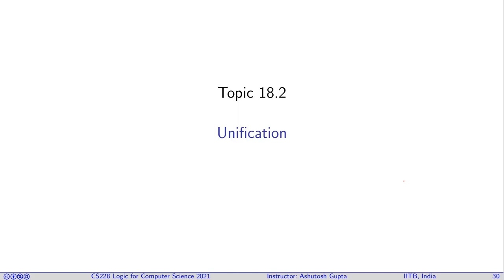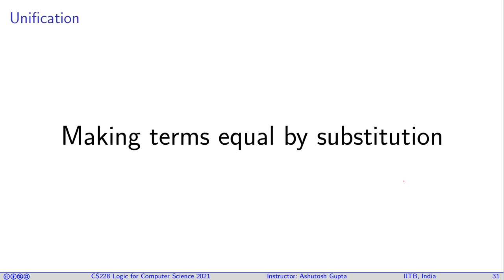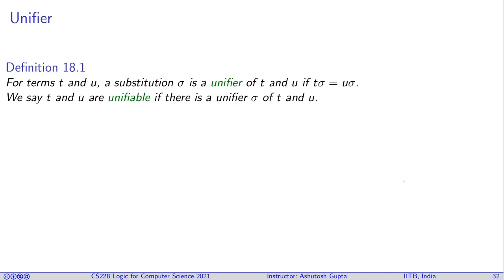We're going to look at the definition of unification and some mathematical basis of the unification process. In a nutshell, unification is making terms equal by substitution. A substitution is called a unifier of terms t and u if, when you apply the substitution on both terms, you get the same term as output. Terms t and u are considered unifiable if there exists some unifier that can make them equal.